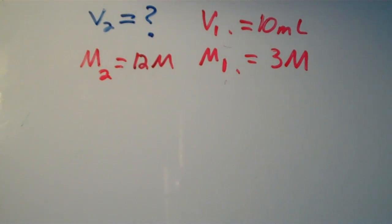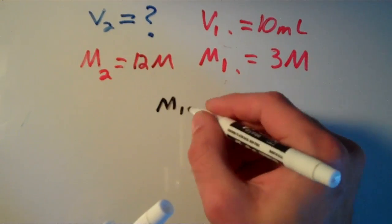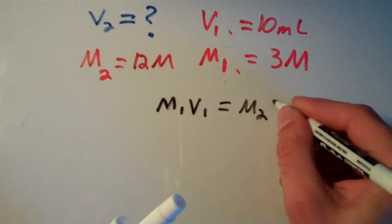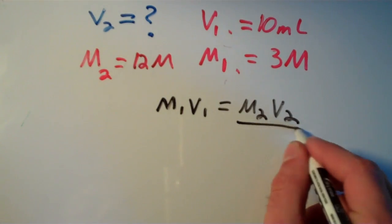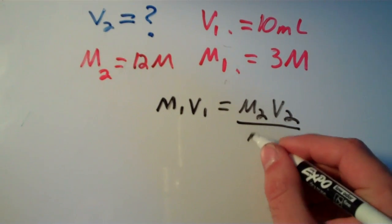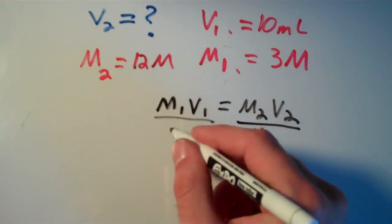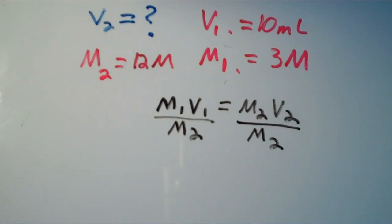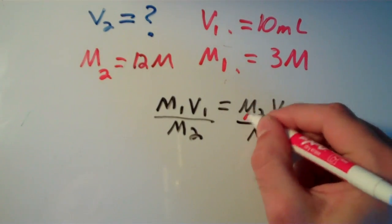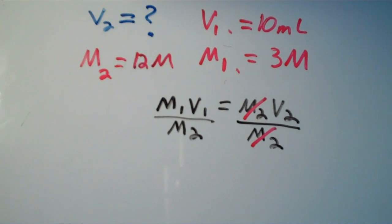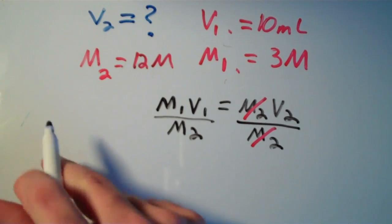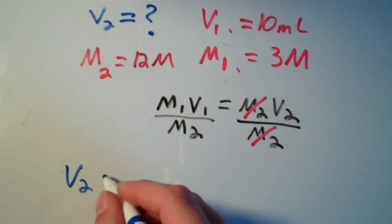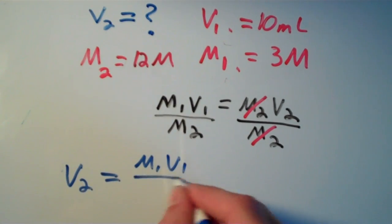So let's solve the equation. Remember that the equation is M1 V1 equals M2 V2. Well, if V2 is our unknown, then I can divide both sides of the equation by M2, because we're trying to get V2 all by itself. The M2's on the right side of the equation cancel, and you end up getting that V2 is equal to M1 V1 over M2.